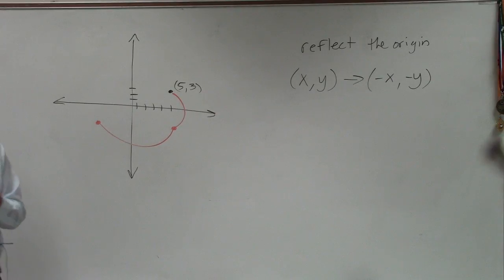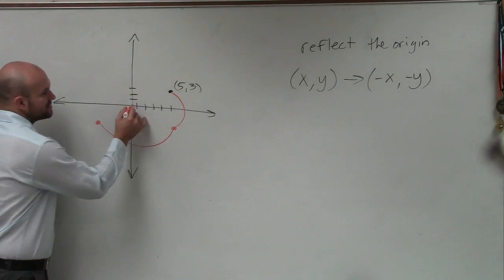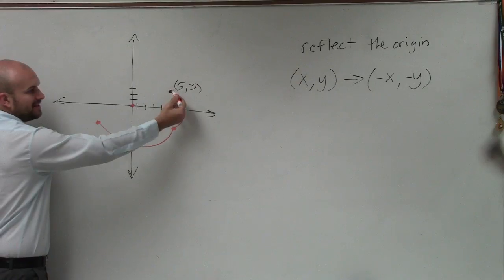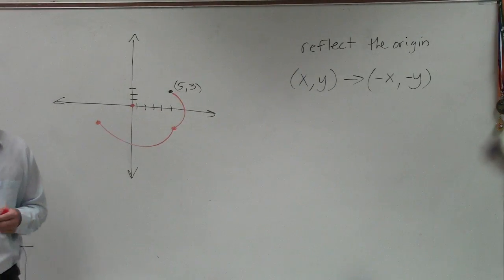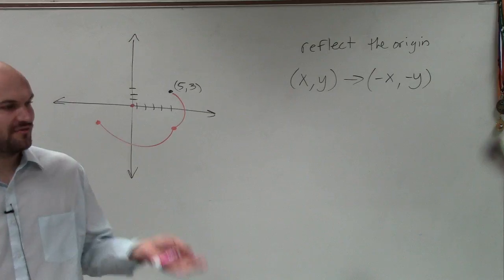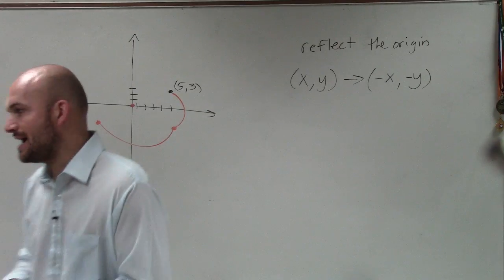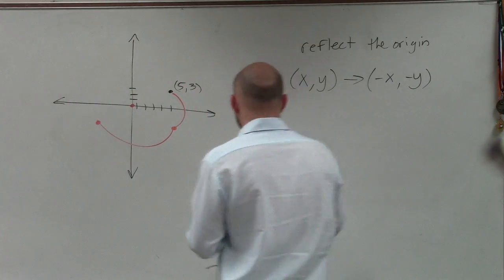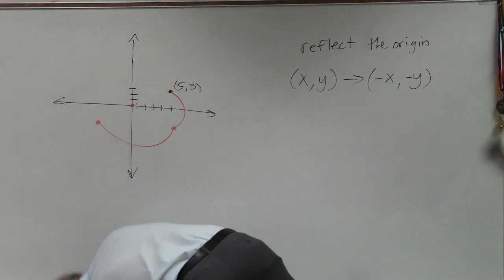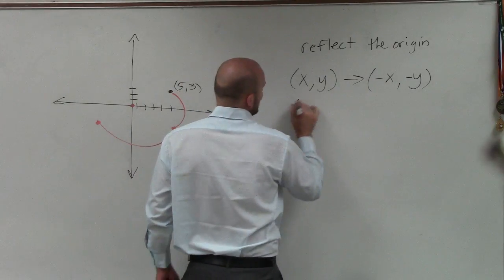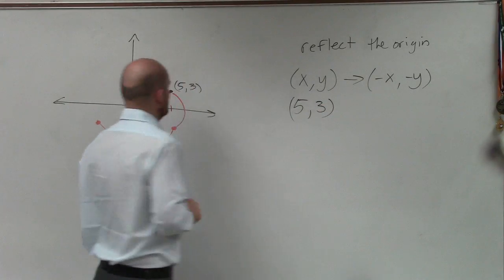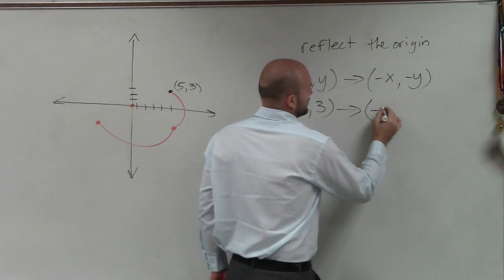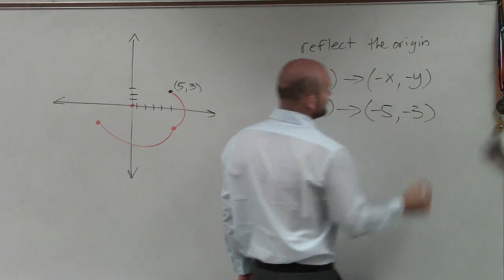So the origin - when you reflect over the origin, remember the origin's right here. So really what you're doing is reflecting over that point. And algebraically, if I have (5,3) to reflect over the origin, that's now just going to be (-5,-3).